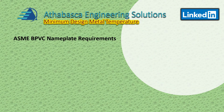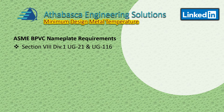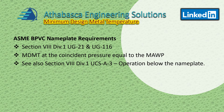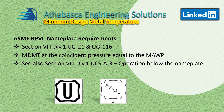Let's talk about ASME pressure vessel code nameplate requirements. In Section 8, Division 1, sections UG21 and UG116 have specific requirements. MDMT is required at the coincident pressure equal to the MAWP. You can also look at Section 8, Division 1, UCS-A3, which talks about operating below the nameplate values and procedures for that. These are the two types of stamps you would see on a nameplate, and it's a requirement to have the MDMT on nameplates as of 1987.